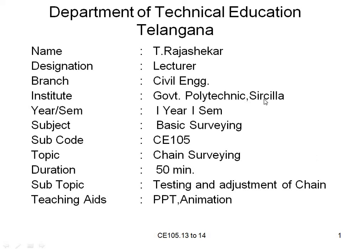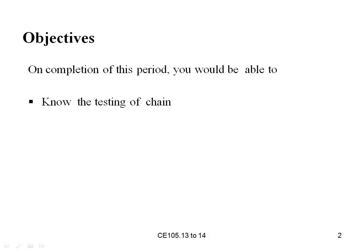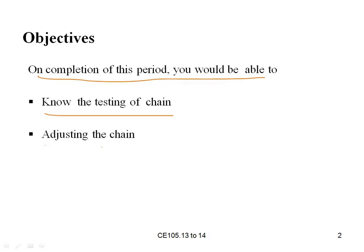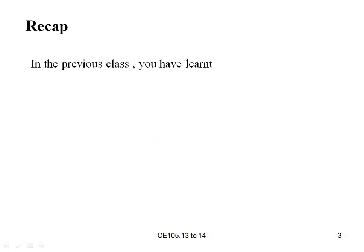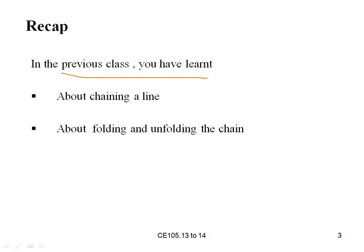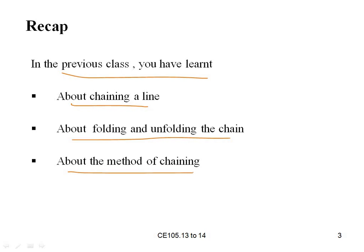Hi students. Today's topic is from the Basic Surveying subject, subject code C105. Our subtopic is from the chain surveying chapter — Testing and Adjustment of Chain. We are going to find out the errors in chain surveying. On completion of this period you would be able to know the testing of chain, adjusting the chain, and correction of error in chain length.